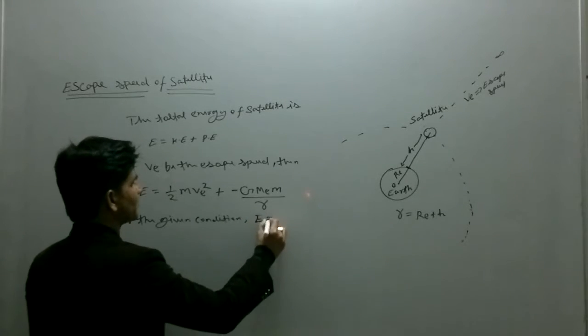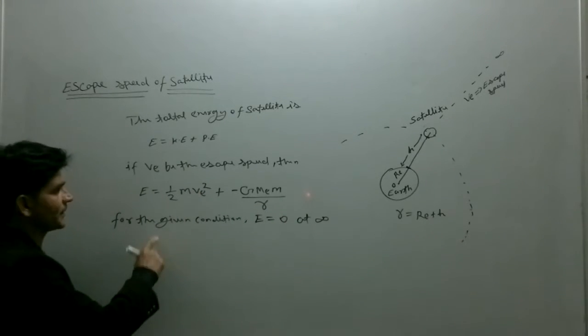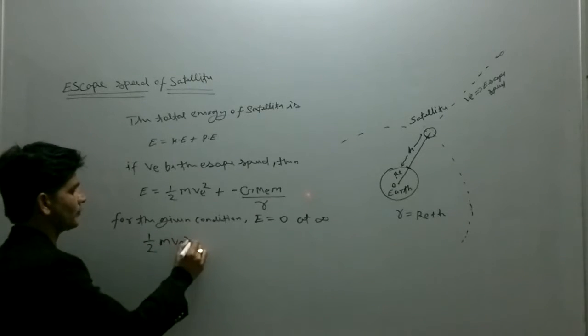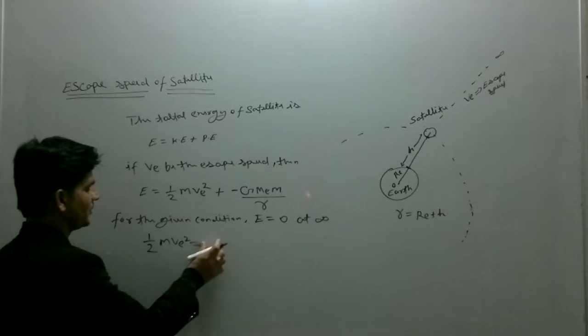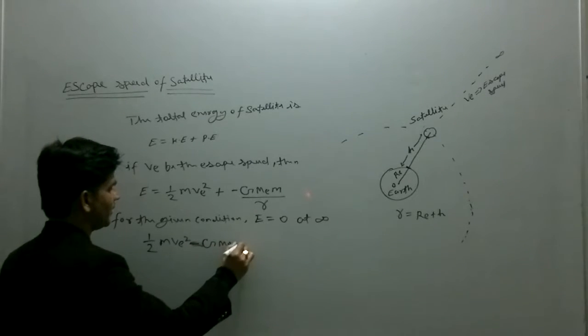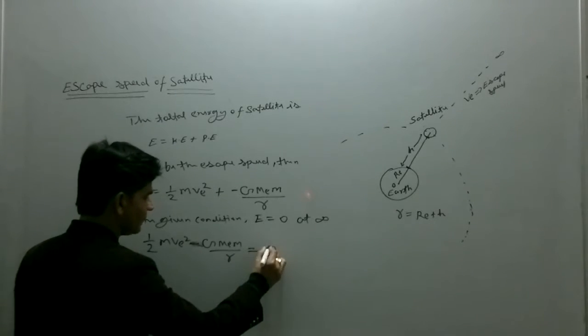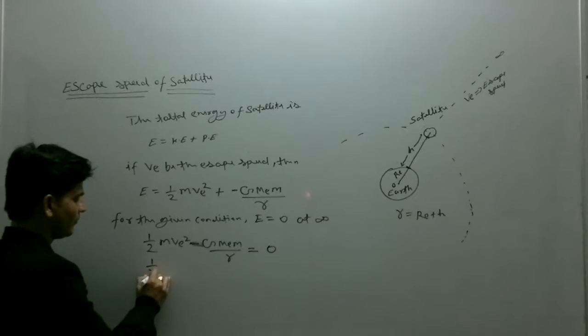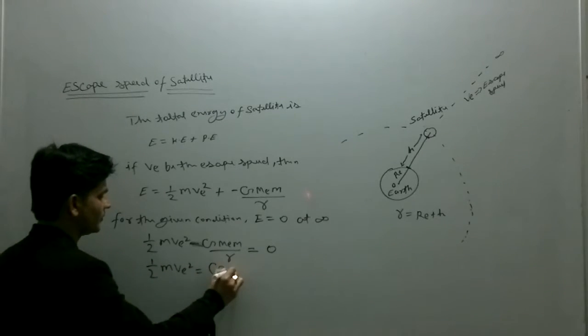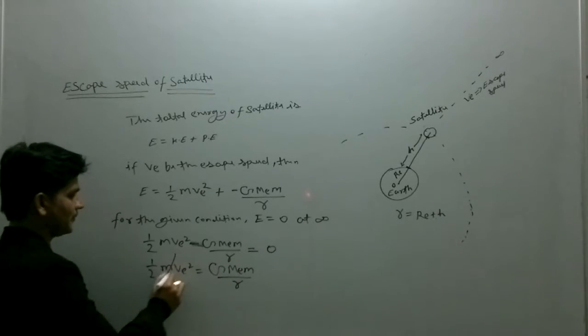For the given condition, E must be equals to 0 at infinity. That is, half m v_e squared equals to minus GMm upon r equals to 0. So one upon two m v_e squared equals to GMm upon r. Let m cancel out.